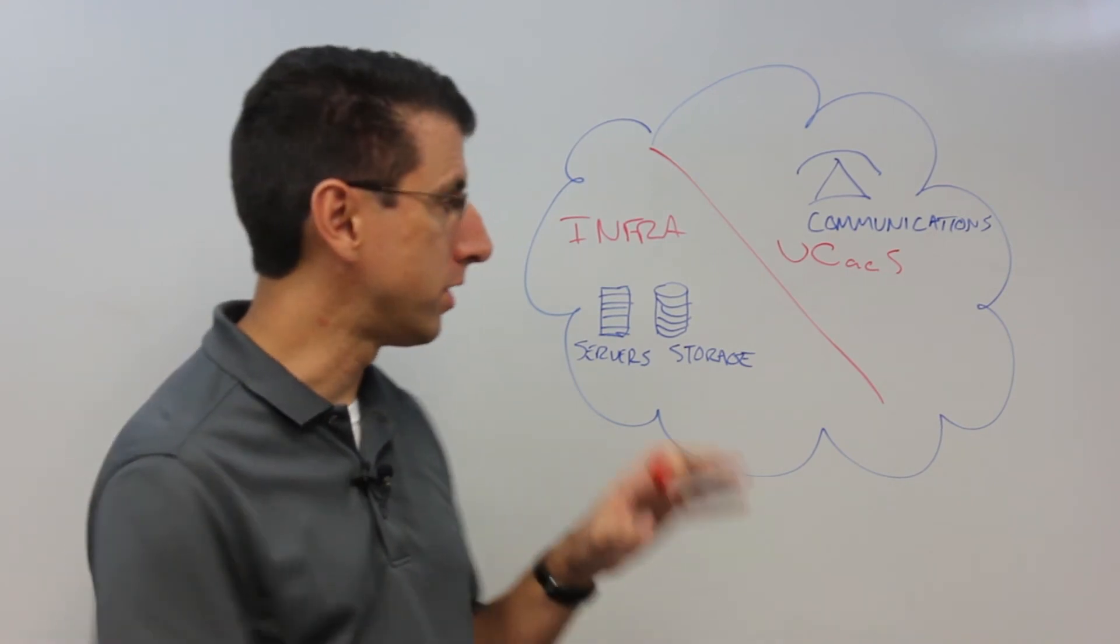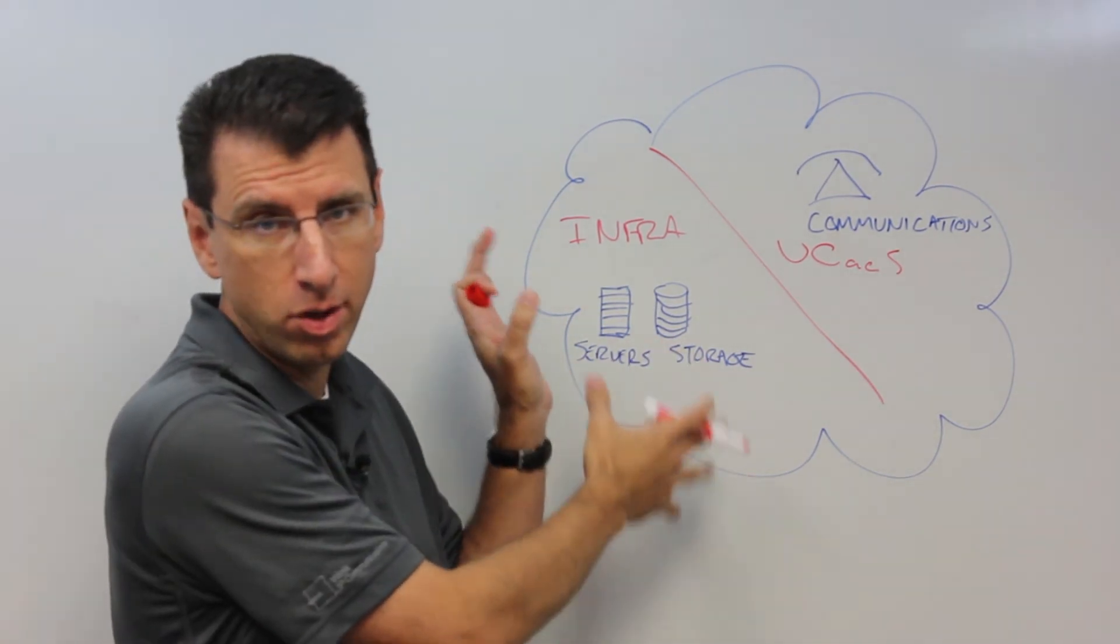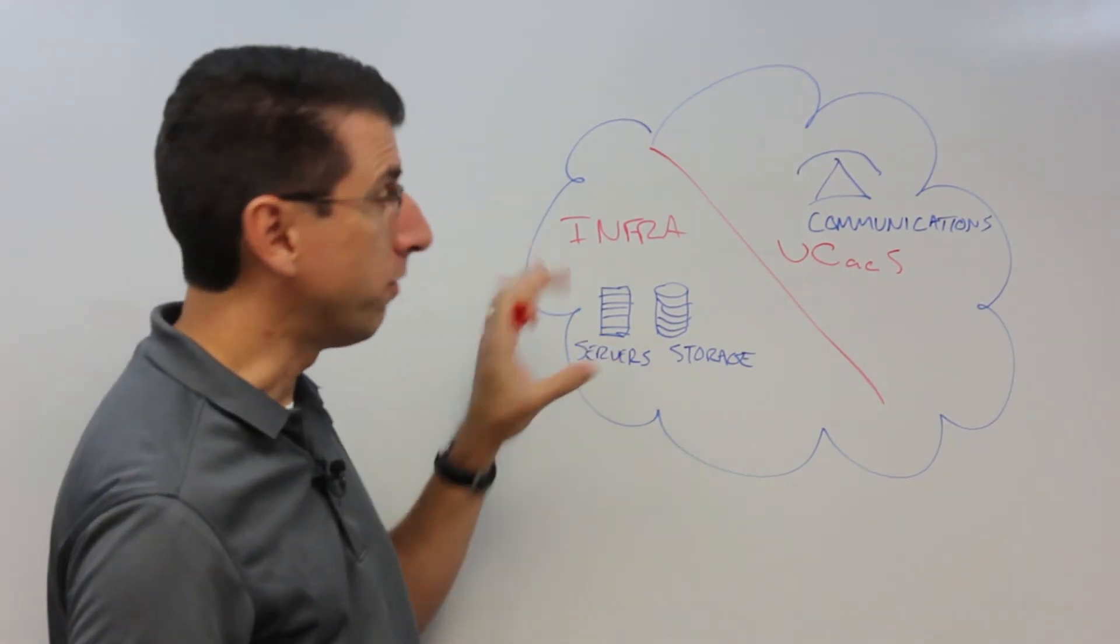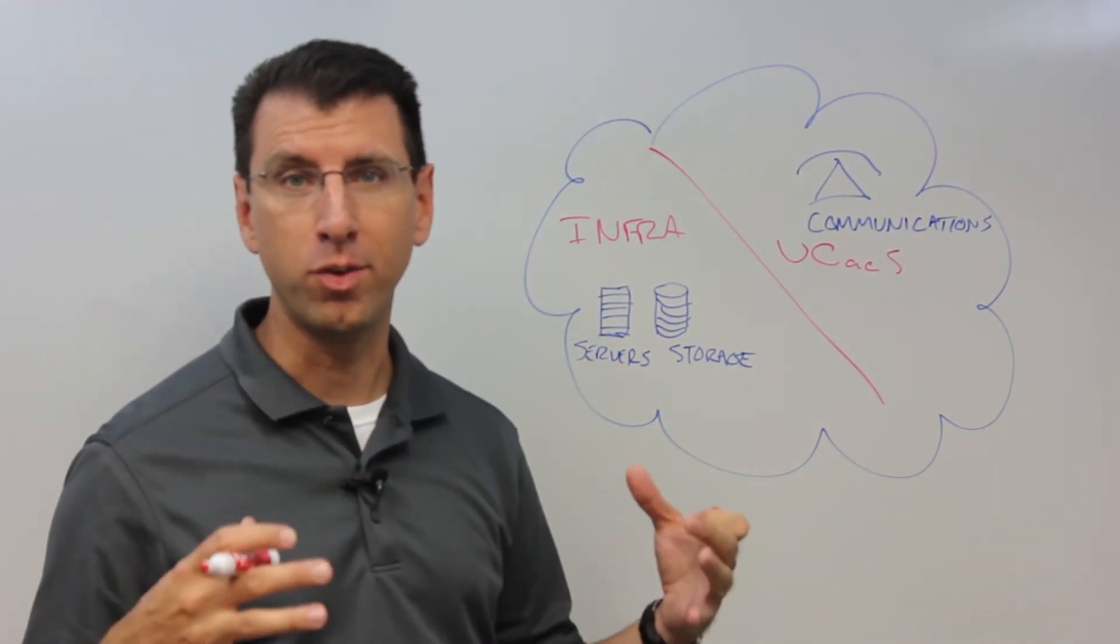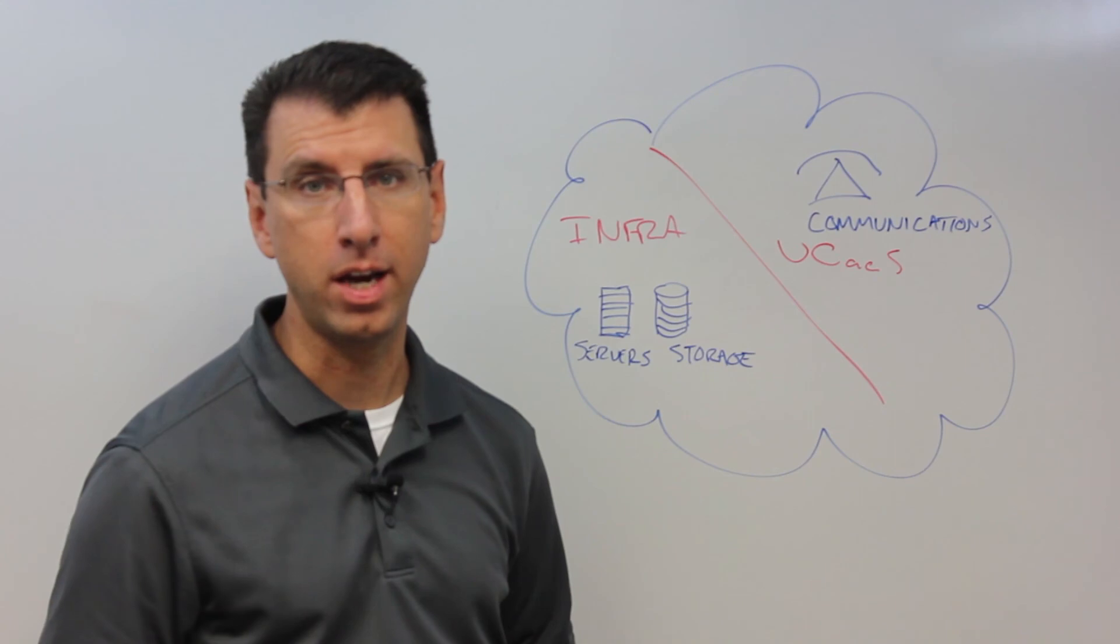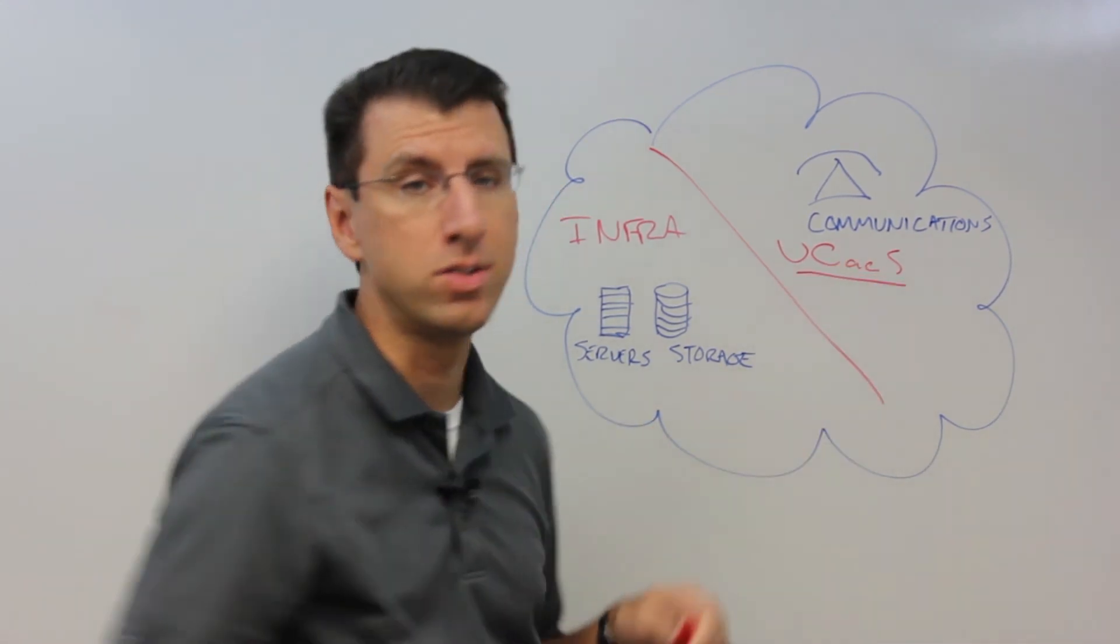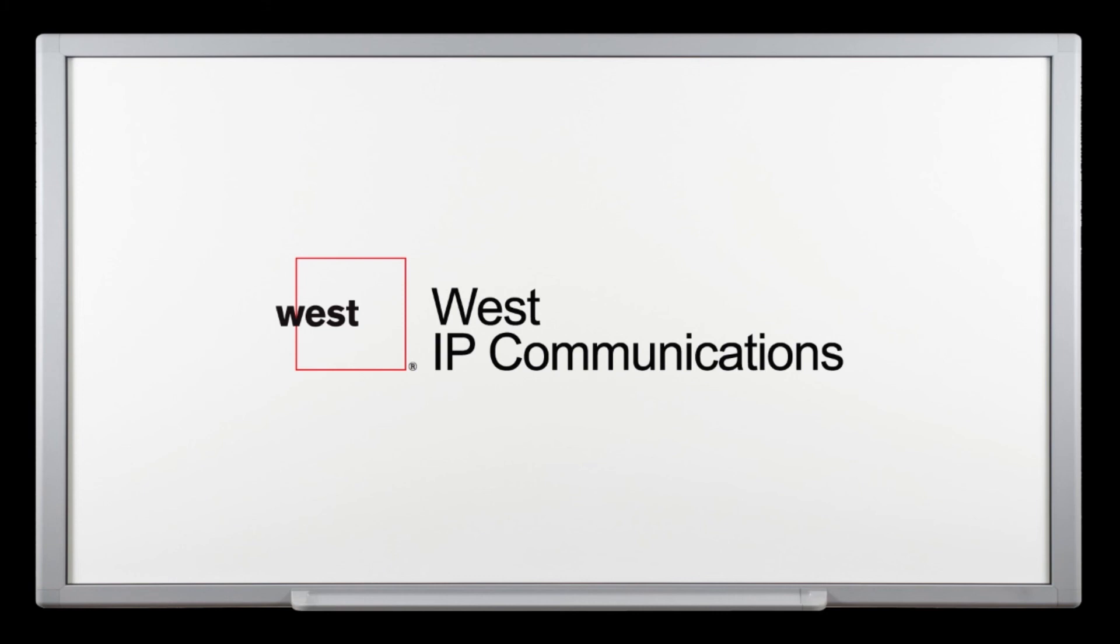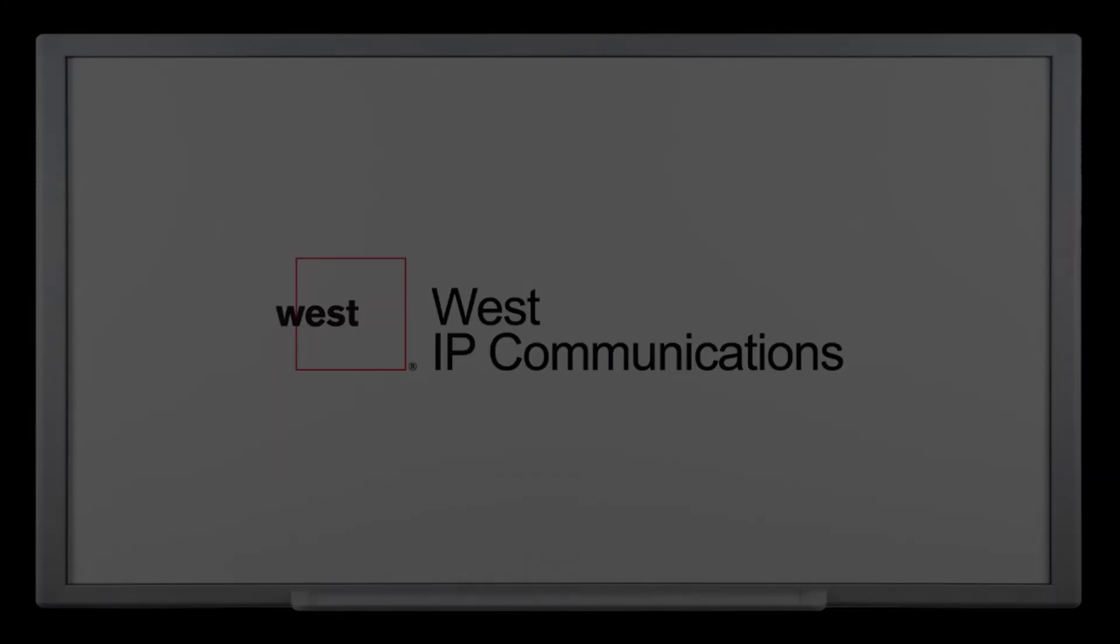So that's the difference. If you want to look for something that just lets you run your own applications on whatever kind of generic server or storage capacity you need, that's infrastructure as a service. If you're looking for an application specifically designed for communications, you want unified communications as a service.